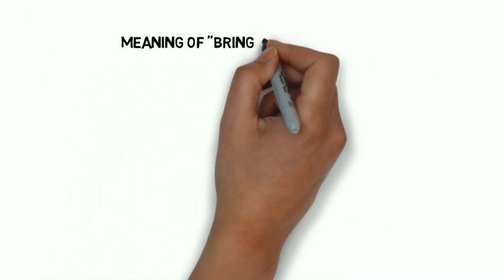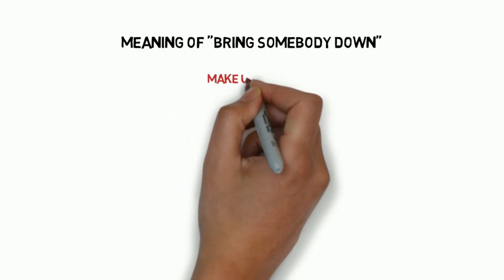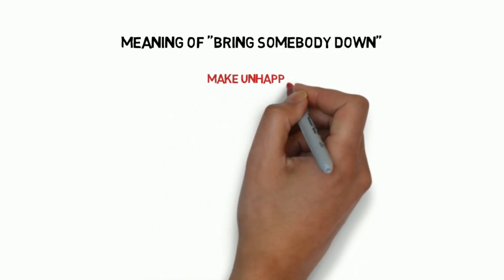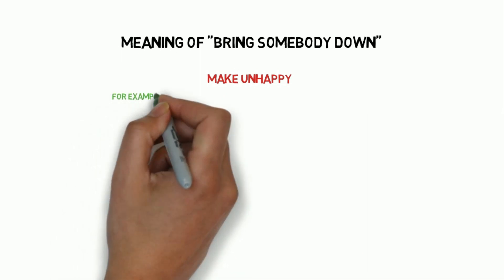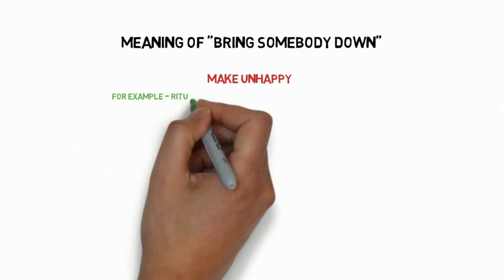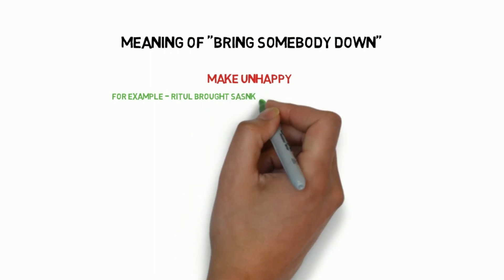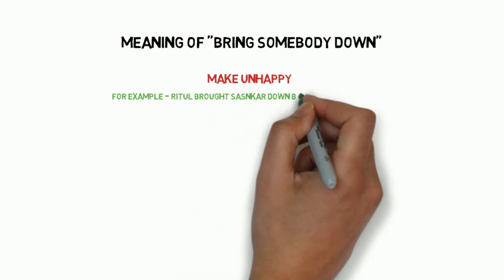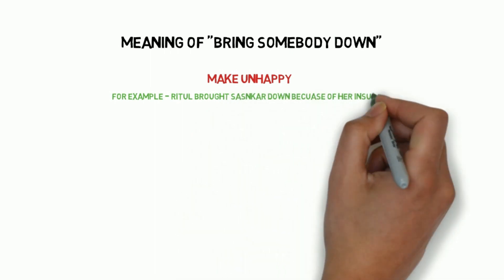Next one is 'bring somebody down,' which means to make someone unhappy — kisi ko nirash kar dena. For example: Ritul brought Sanskar down because of her insult.